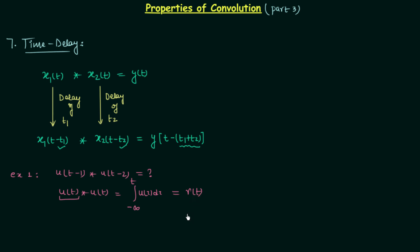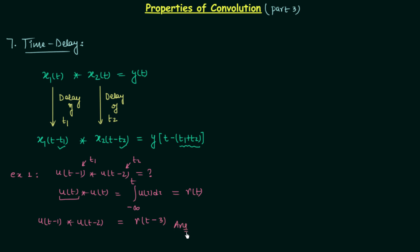The integration of the unit step signal is equal to the unit ramp signal. That is the output in the case of no delay. But here we are providing a delay of one unit to the first signal and two units to the second signal. So t1 = 1 and t2 = 2. Therefore, u(t-1) convolved with u(t-2) will be equal to r(t - (1+2)) = r(t - 3).